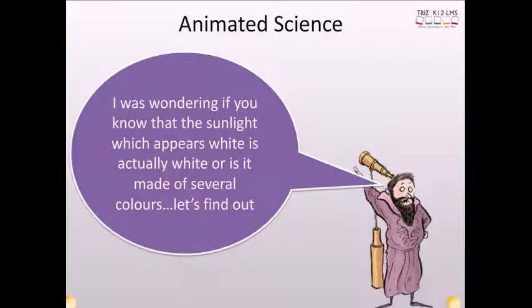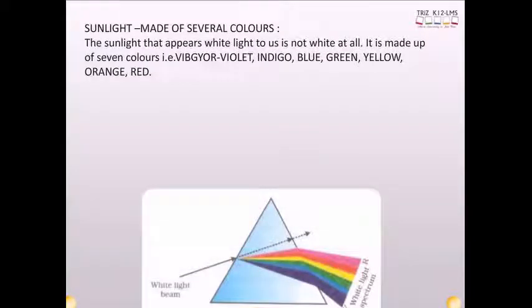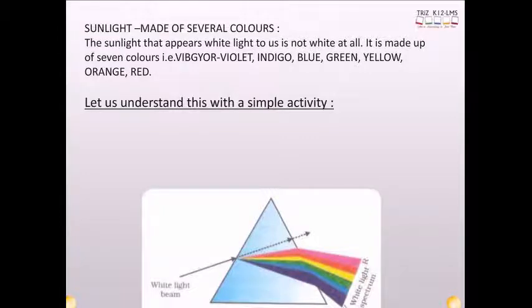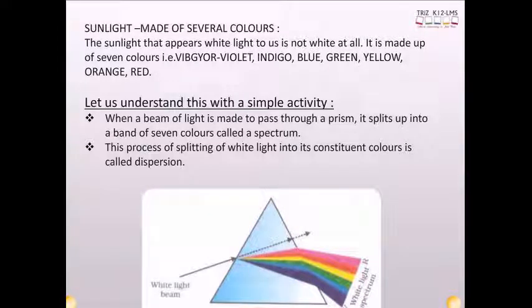I was wondering if you know that the sunlight which appears white is actually white or it is made of several colors. The sunlight that appears white to us is not white at all. It is made up of seven colors. When a beam of light is made to pass through a prism, it splits up into a band of seven colors called a spectrum. This process of splitting of white light into its constituent colors is called dispersion. A rainbow is a natural phenomenon showing dispersion.